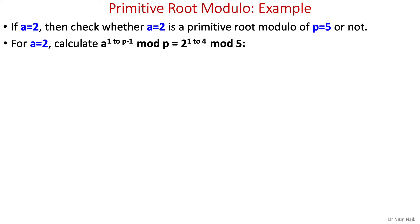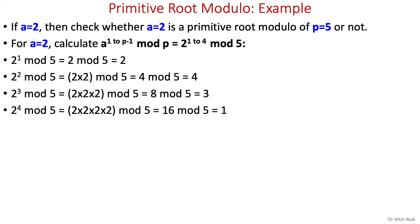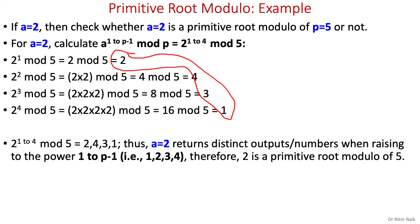Next, a equals 2. Calculate 2 to the power 1 through 4 mod 5: 2¹ mod 5 = 2, 2² mod 5 = 4, 2³ mod 5 = 3, 2⁴ mod 5 = 1. All outputs are different, so it satisfies the condition. Therefore a equals 2 is a primitive root modulo of 5.